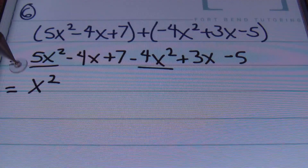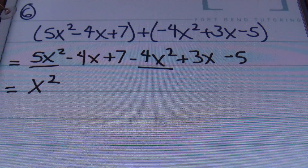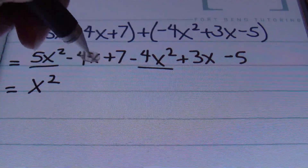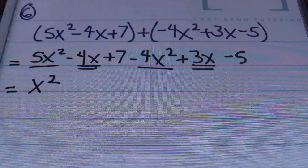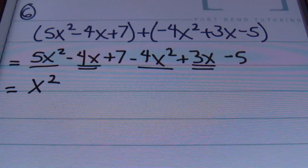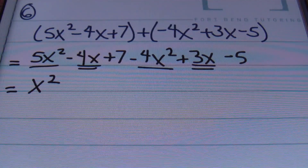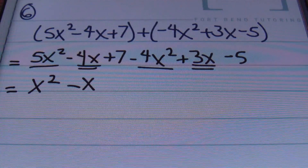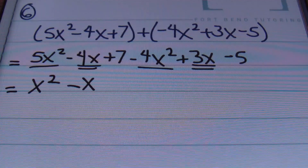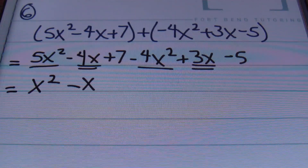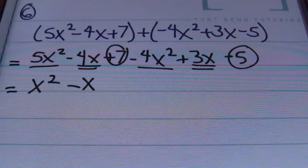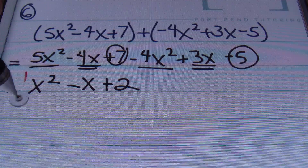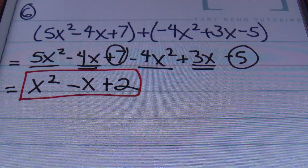Don't write the 1 — it's redundant. So just x squared. Then I'm going to combine my x to the first power terms: I have negative 4x and a positive 3x. Combining the coefficients, negative 4 plus 3 gives me negative 1x, and again you don't need to write the 1. Then 7 minus 5 is still 2, so I bring that down. The answer is x squared minus x plus 2, ladies and gentlemen.